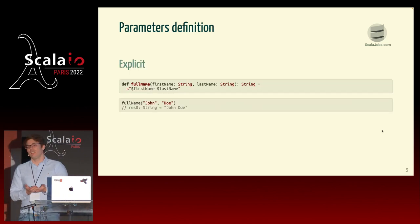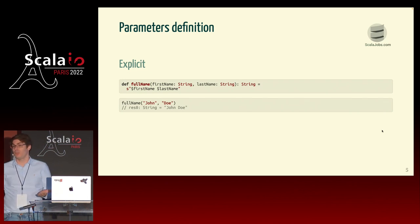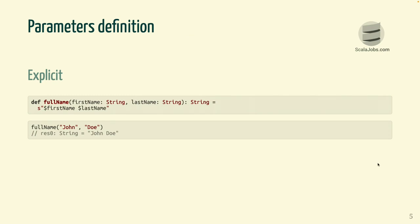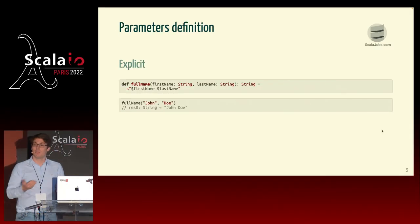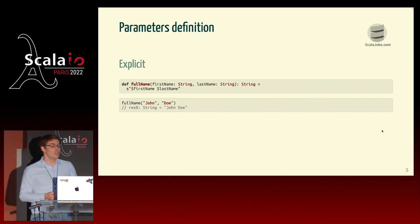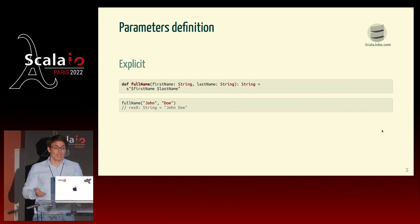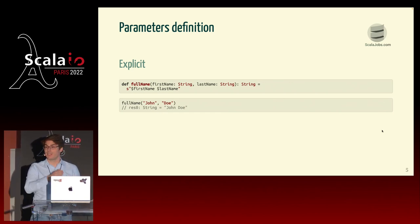In order to discuss this, it would be good to review the different kinds of parameters we can use in Scala. The simplest and most common way to define parameters is to be explicit about it. You define a function like full name and define two parameters like first name and last name. When you call this function, you just pass them in the order they were defined. Simple.